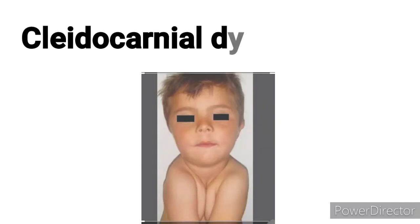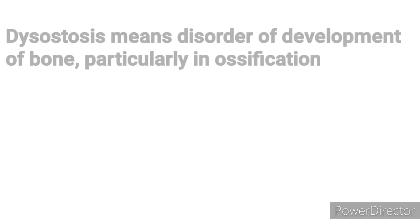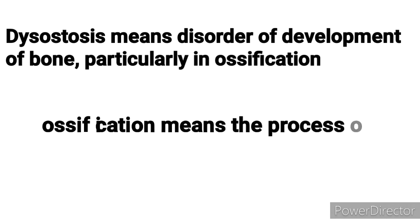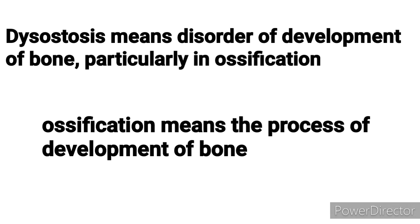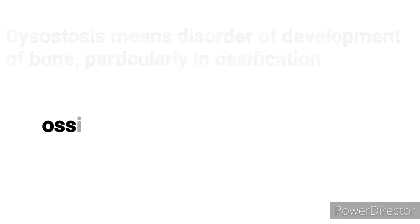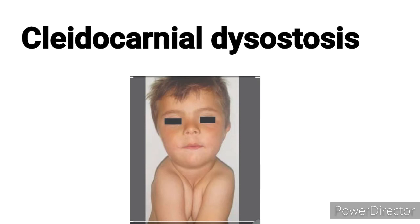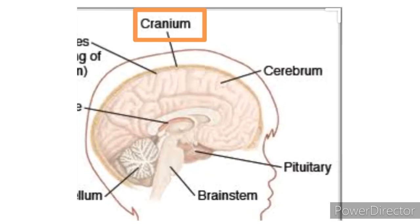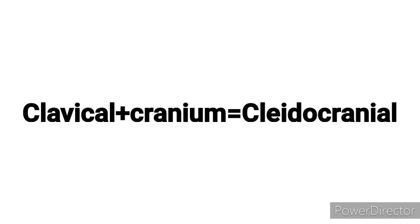Cleidocranial dysostosis — 'diastasis' is a term which means a disorder of development of bone, or ossification of bone. Ossification is a process of bone development; when any defect occurs in ossification during bone development, that is the meaning of the word diastasis. 'Cleido' refers to the clavicle and 'cranial' refers to the cranium. The cranium is the protective bony covering around the brain, and the clavicle is one of our bones. When there is a defect in ossification of both of these bones, it is called cleidocranial dysostosis.